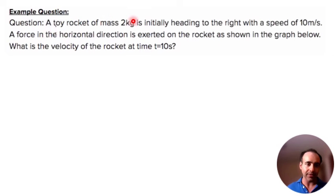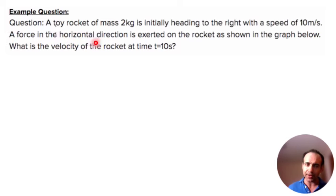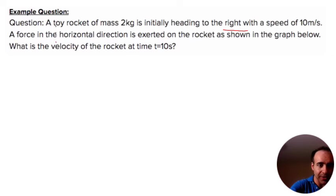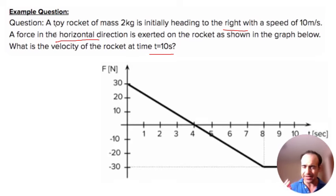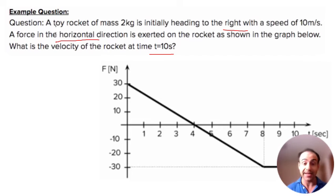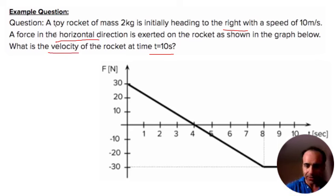A toy rocket has a mass of two kilograms and is heading to the right with an initial velocity of 10 meters per second. There's a random force also in the horizontal direction, so there are no trigonometric components to deal with. We want to know the velocity of the rocket after 10 seconds have passed, given a force versus time graph.